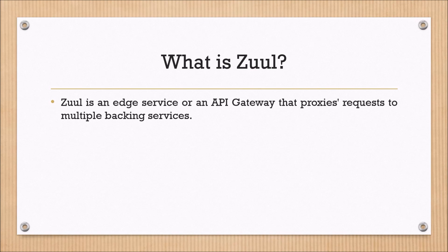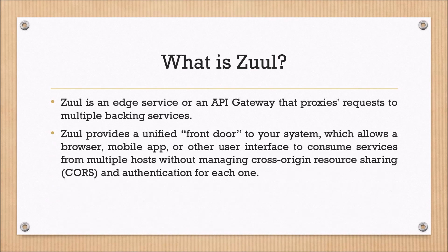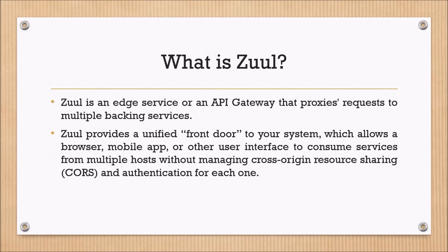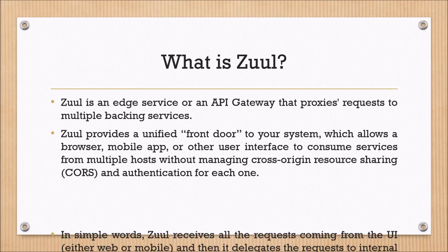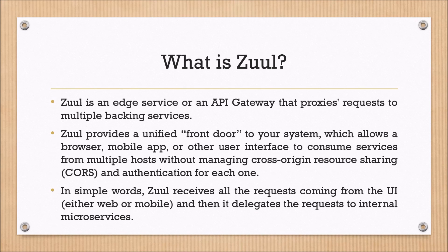Zuul is an edge service or an API gateway that proxies requests to multiple backing services. Zuul provides a unified front door to your system, which allows a browser, mobile app, or other user interfaces to consume services from multiple hosts without managing cross-origin resource sharing (CORS) and authentication for each one.